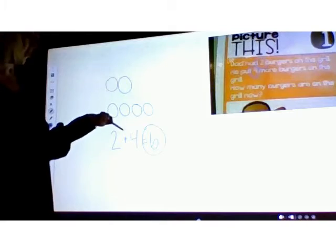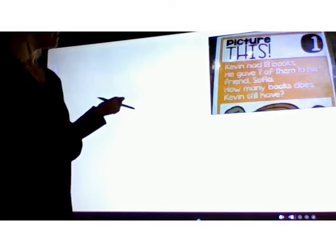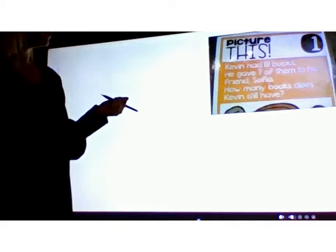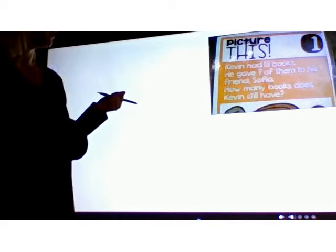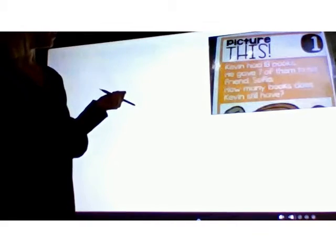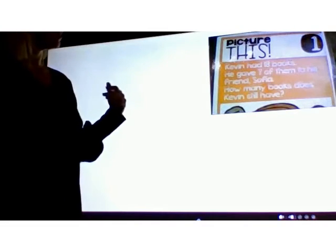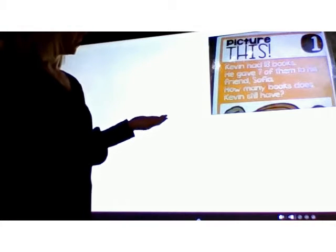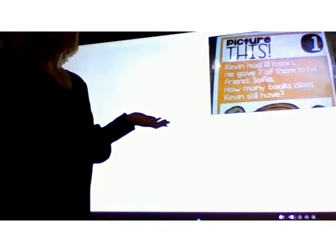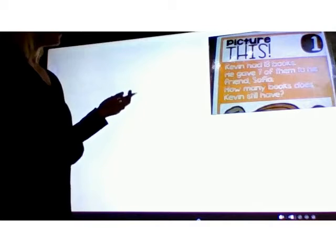For this next problem, it says Kevin has 18 books, he gave seven of them to his friend Sophia, how many books does Kevin still have? If Kevin starts with 18 books and he's giving them away, our number's getting smaller, and so it's subtraction.